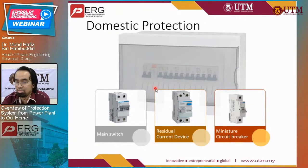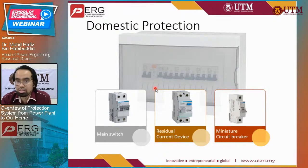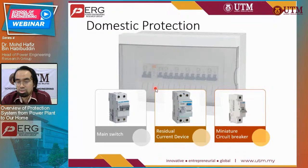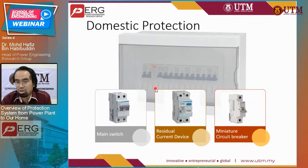The last part will be on domestic protection. I'm going to introduce several protective devices available in your home. You are familiar with the distribution box in your home — it basically has three equipment inside. The first one is the main switch — its function is to isolate your network from the supply of electricity when you want to do some wiring or maintenance. The second device is called the residual current device, which detects a leakage in your system. If there is a leakage, the current in the live and neutral will not be the same, causing the residual current device to trip.